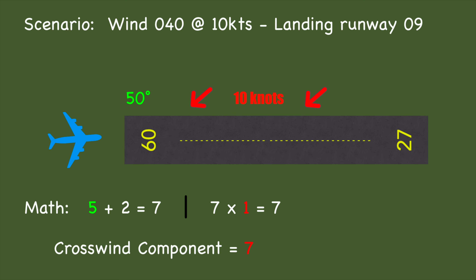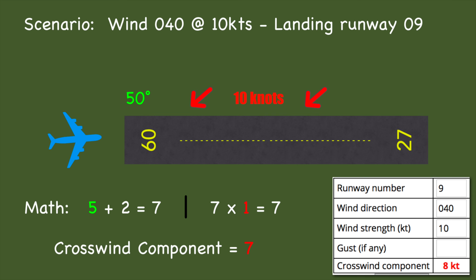Scenario one: wind is 040 at 10 knots, you're landing on runway 9. We have a 50-degree difference. The wind is 10 knots. So: 5 (dropping the zero from 50) plus 2 equals 7. 7 times 1 (dropping the zero from 10) equals 7 — crosswind component of 7 knots. I ran this through an online calculator: runway 9, 040, 10 knots — the computer gave me 8. My mental math gave me 7. If you can fly 1 knot, good for you. The goal is just to get a basic idea of what you're getting into before you land.